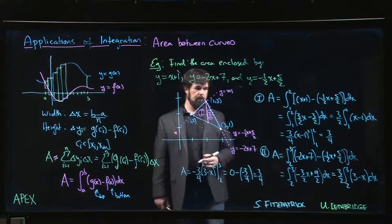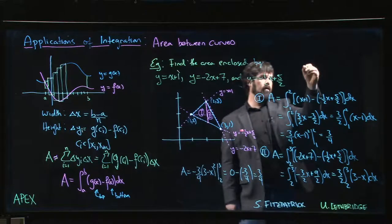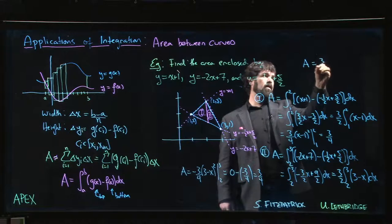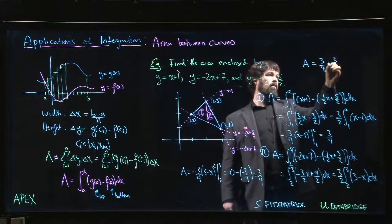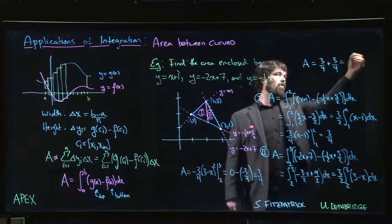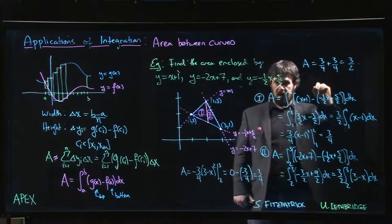And so the total area is the sum of the 2. So the total area is going to be 3 quarters plus 3 quarters, which is 3 halves.